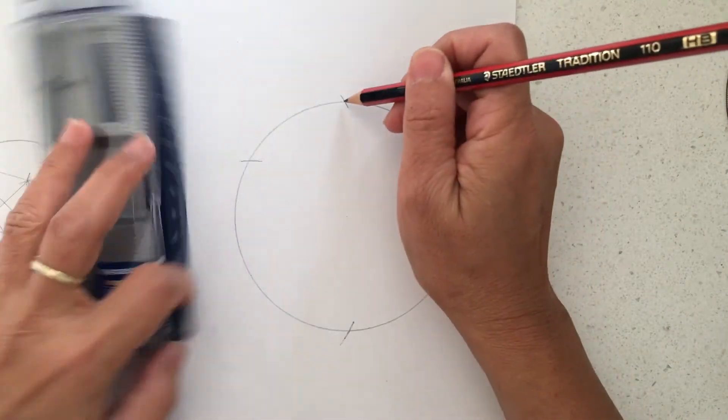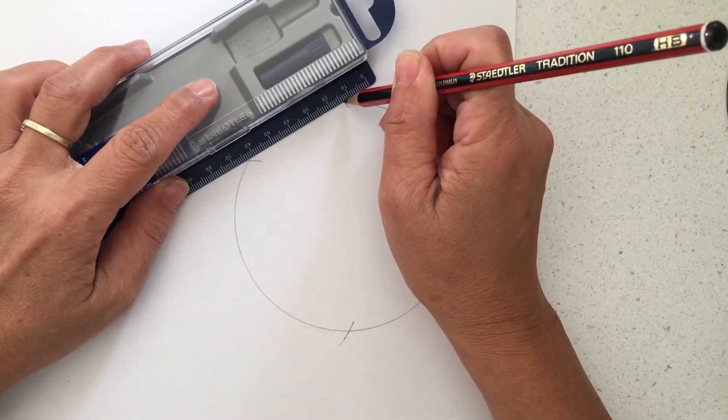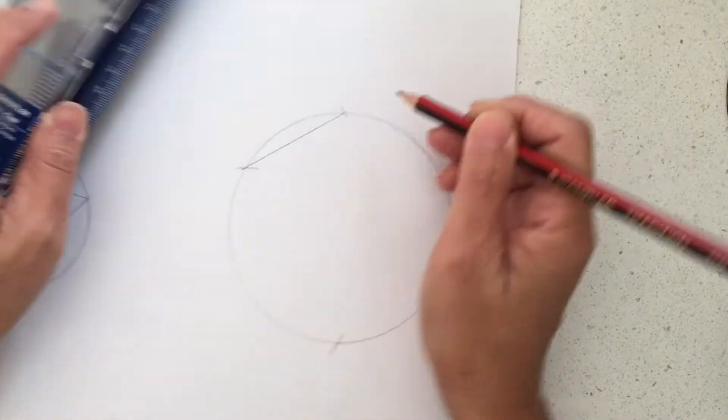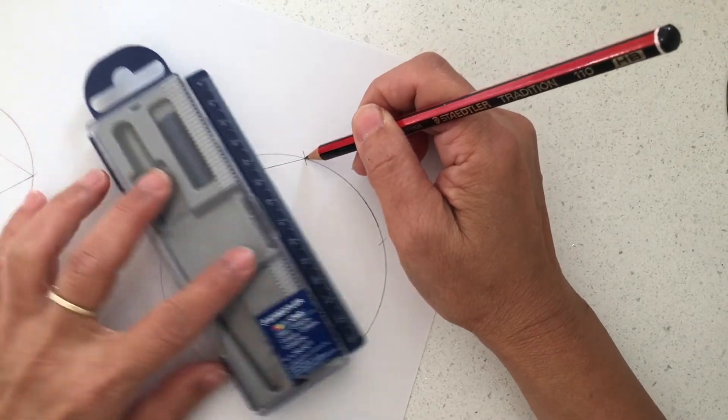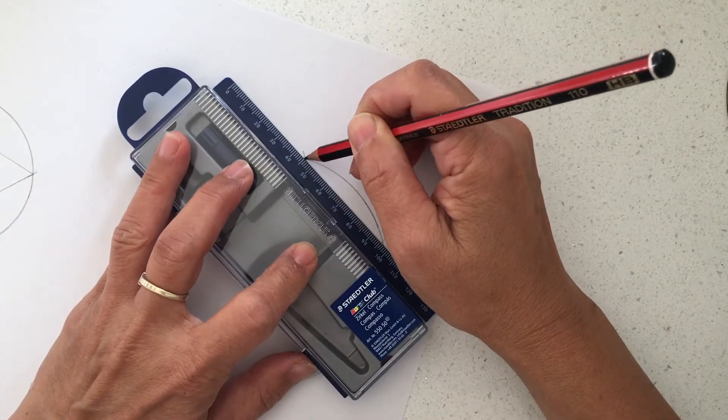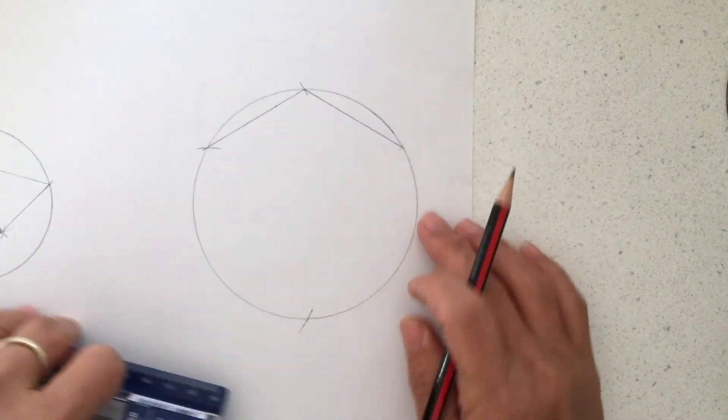But what I want to show you is, if you then draw the line on this point and the line on this point, you've just created an angle.